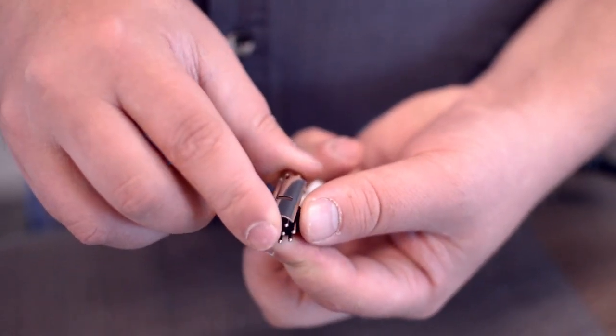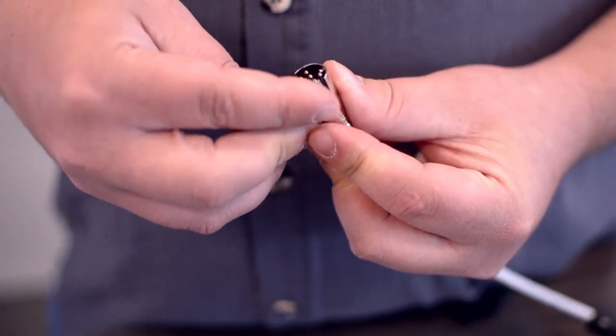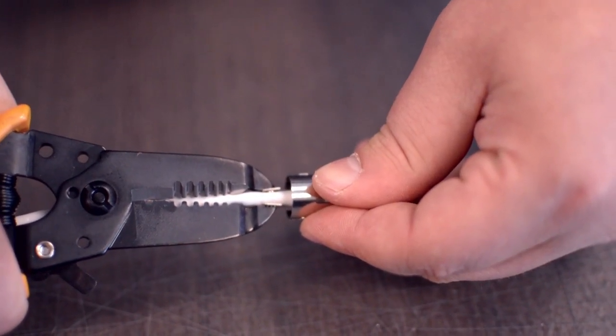After you have soldered the necessary points on the connector, place the metal shell around the pins. Squeeze the strain relief tab onto the cable jacket and slide up the boot.